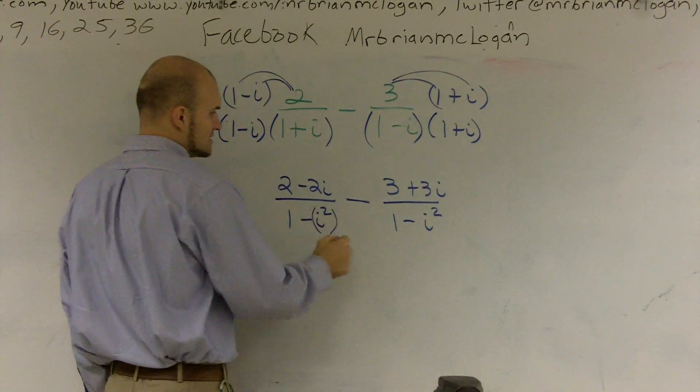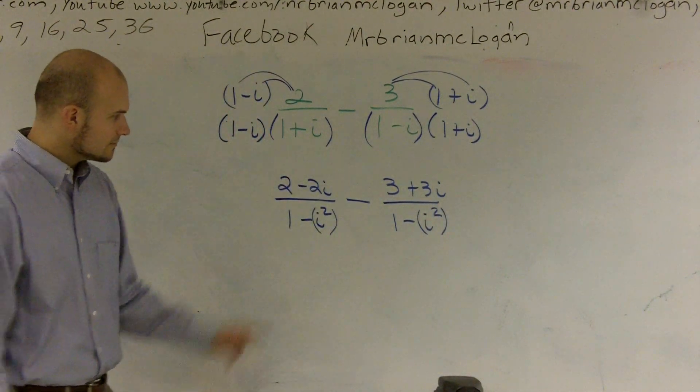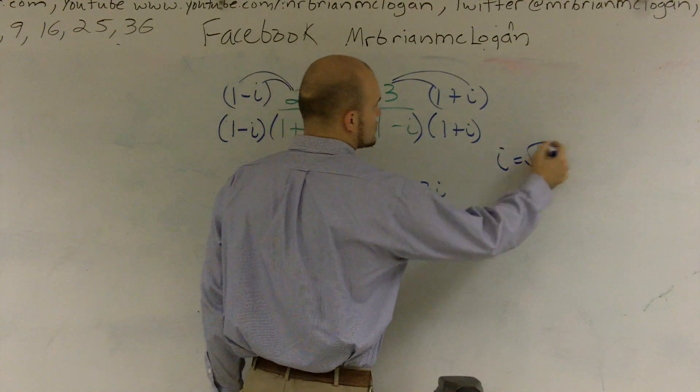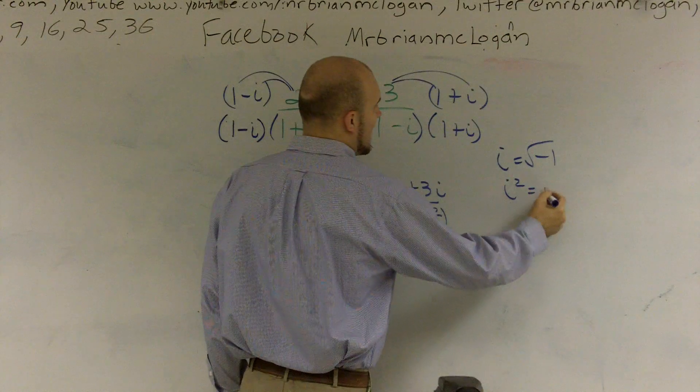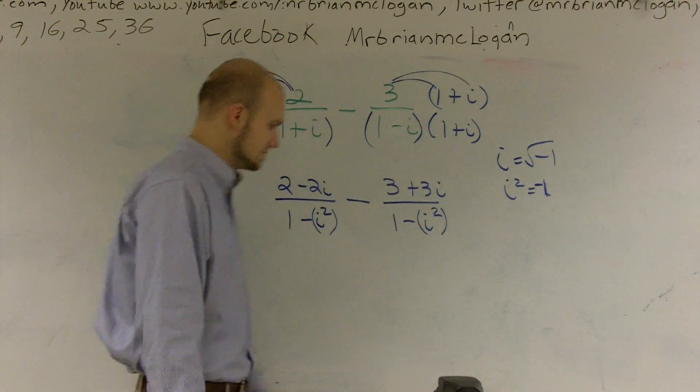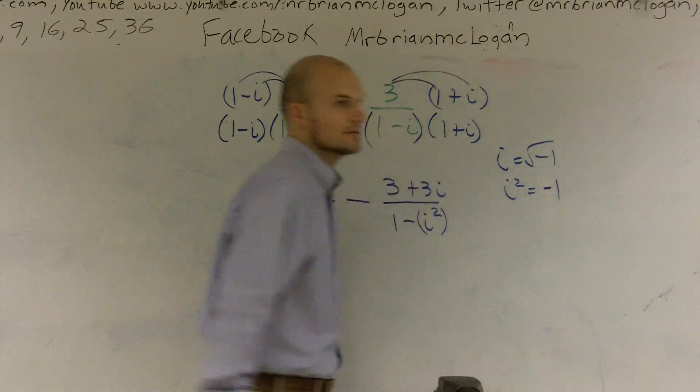All right, I'm actually going to put this in parentheses. Now, one thing you need to remember is we say i equals the square root of negative 1. So when you square both sides, you get i squared is equal to negative 1. Let's put a space there. All right.